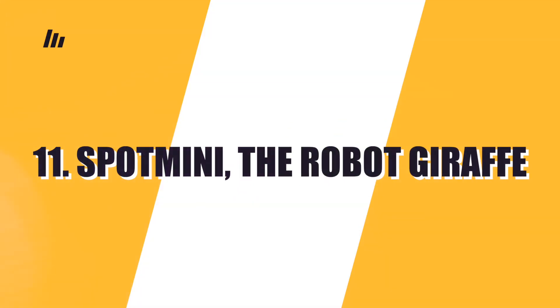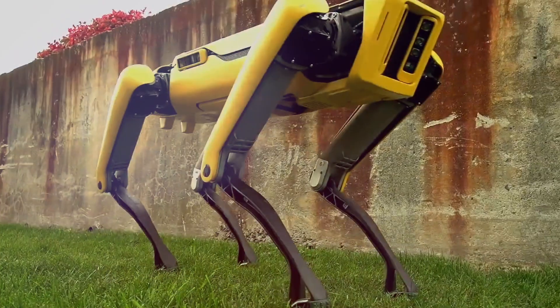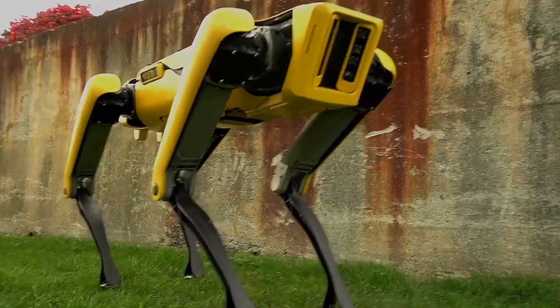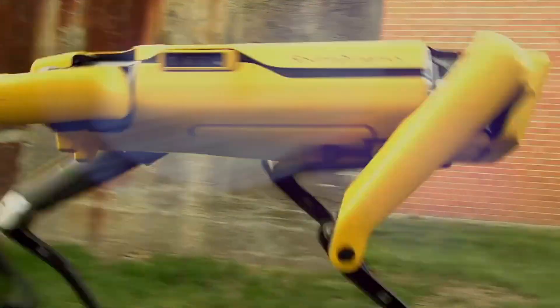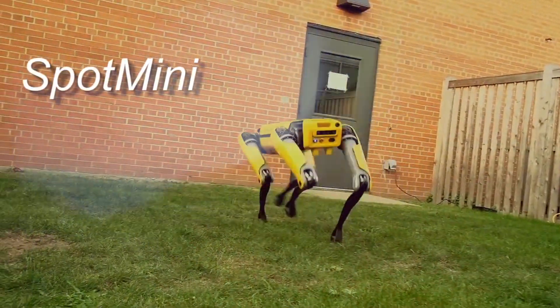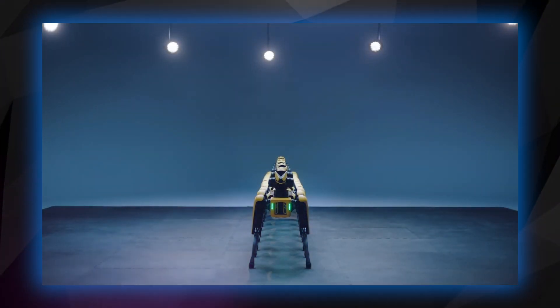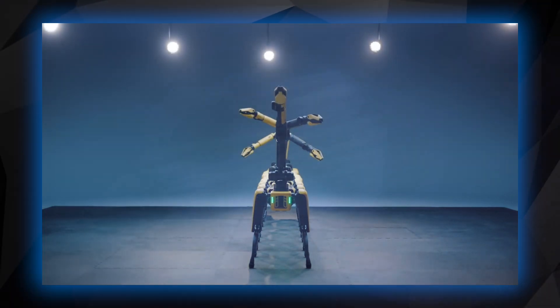Number 11: Spot Mini the Robot Giraffe. Boston Dynamics has been involved with the creation of human and dog-like robots for military or civilian use. Their latest creation, Spot Mini, is primarily intended as a household companion and looks like a dog-sized robot giraffe.